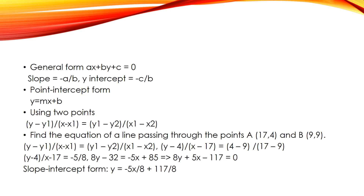Substituting the values in the equation, we get (Y − 4) / (X − 17) = (4 − 9) / (17 − 9), so (Y − 4) / (X − 17) = −5/8. Therefore, 8Y − 32 = −5X + 85, giving 8Y + 5X − 117 = 0. In slope-intercept form: Y = −5X/8 + 117/8.